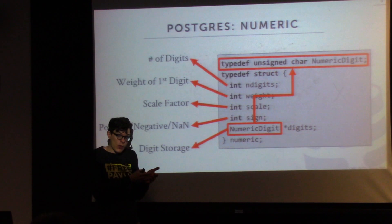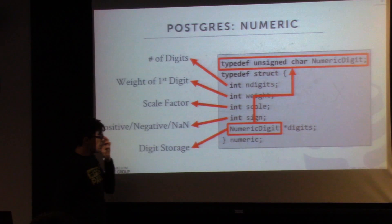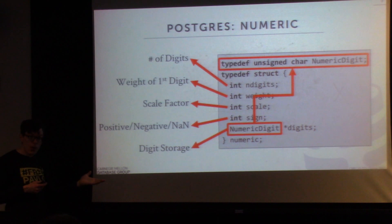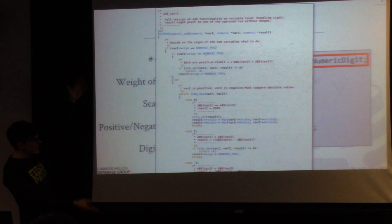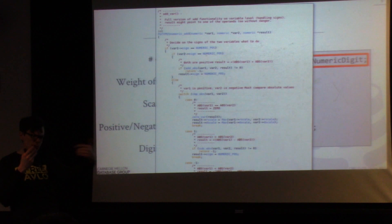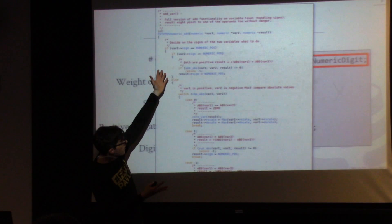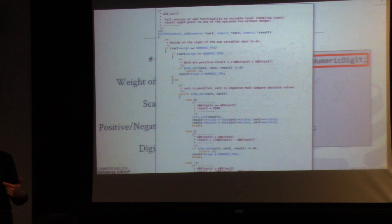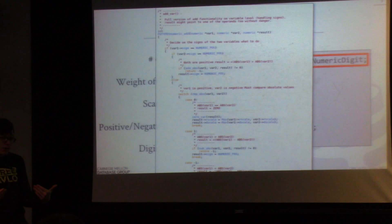Whereas before I could store a number as a single 64-bit value, now I have to store extra bits for every single digit. This is how Postgres and all systems supporting numeric data types avoid rounding errors. But the problem is this is slow. Looking at the Postgres addition function for numeric plus numeric, there are all these conditional statements: if one is positive and one is negative, convert a certain way; if one is not a number, do something different. This is way, way slower than native IEEE 754 types, where the hardware just puts values in a floating-point register and does the addition.